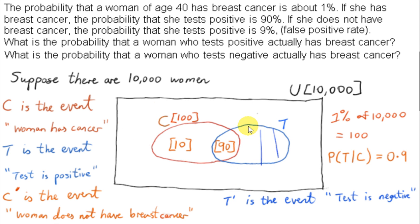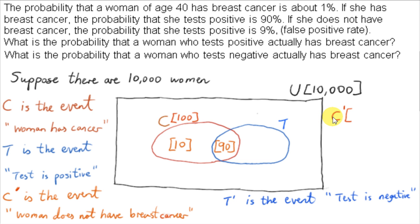The region outside of C represents the women who do not have cancer but do test positive — elements inside T but outside C. Out of 10,000 women, if 100 have breast cancer, then 10,000 minus 100, or 9,900, do not have breast cancer. So there are 9,900 elements in set C'.